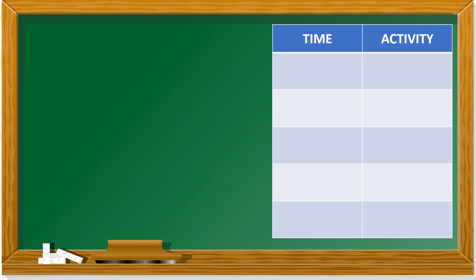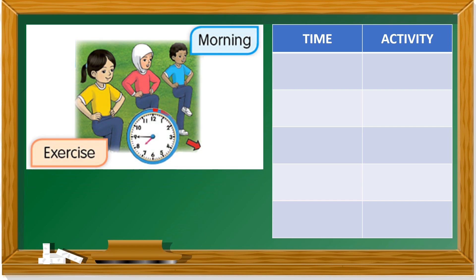The first activity — what time is it? We look at the hour hand. The hour hand is pointing between seven and eight, not yet eight. How about the minute hand? The minute hand is pointing to nine. Nine times five is forty-five. So it's seven forty-five in the morning. We have to write 'in the morning' because it could be at night as well.